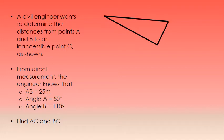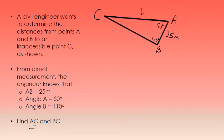I'll solve this problem on a simplified diagram. To recap, we know that side AB has a measure of 25 meters, angle A is 50 degrees, and angle B is 110 degrees. We're being asked to find side AC — which I'll call side B in my diagram because it's across from angle B — and side BC, which I'll call side A because it's across from angle A.